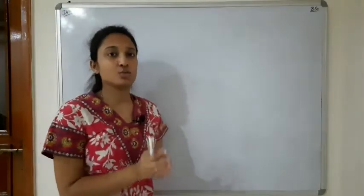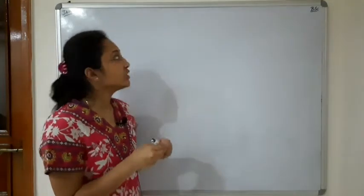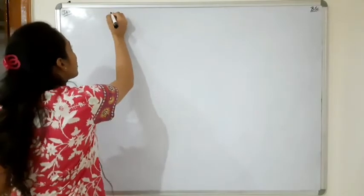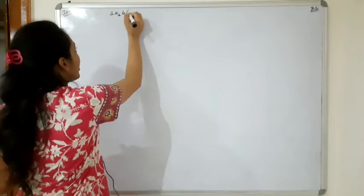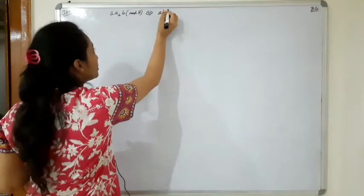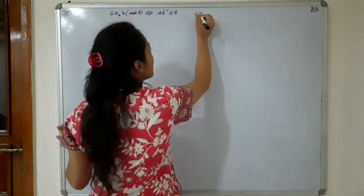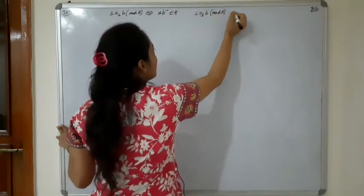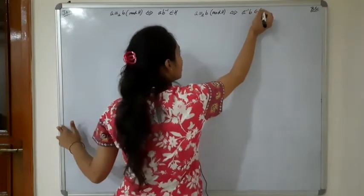In the previous lecture, we saw right cosets and left cosets. Right congruence modulo: a is right congruent to b mod H if and only if ab⁻¹ belongs to H, and a is left congruent to b mod H if and only if a⁻¹b belongs to H.